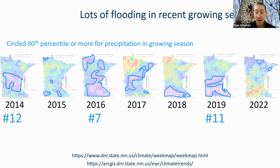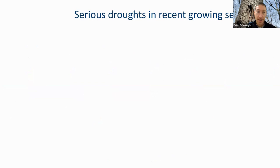When you look at the entire state, the amount of precipitation received during the growing seasons shows these years rank in the top 12 all time: 2014 was the 12th wettest, 2016 the 7th wettest, and 2019 the 11th wettest all time.